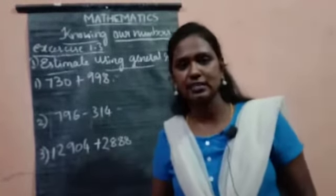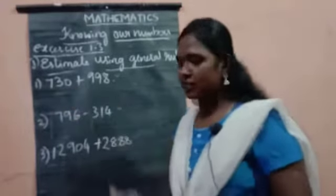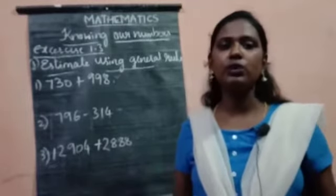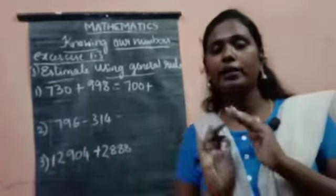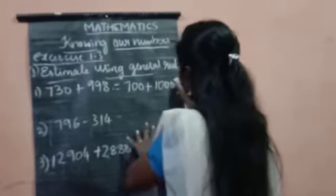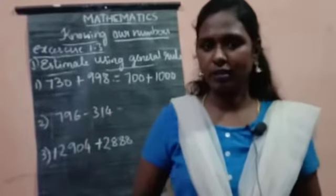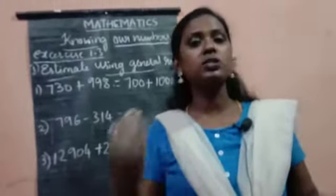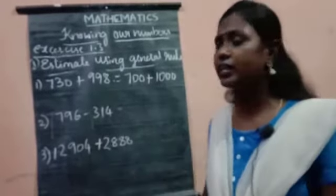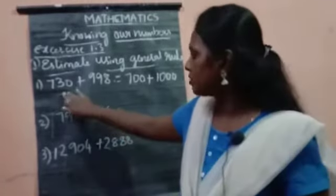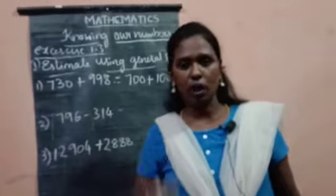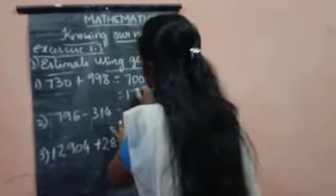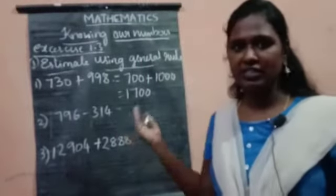Here 730 is there, so we consider it as 700. Plus 998 is around or near to 1000, so write 1000. When we write 700, you might be thinking if it was 750 or above 750, 751, 756, or 760, 780, you would have written 800. But here 730, the number is below 50, so consider it just as 700. Add 700 plus 1000 is 1700. Wasn't it easy? Yes.